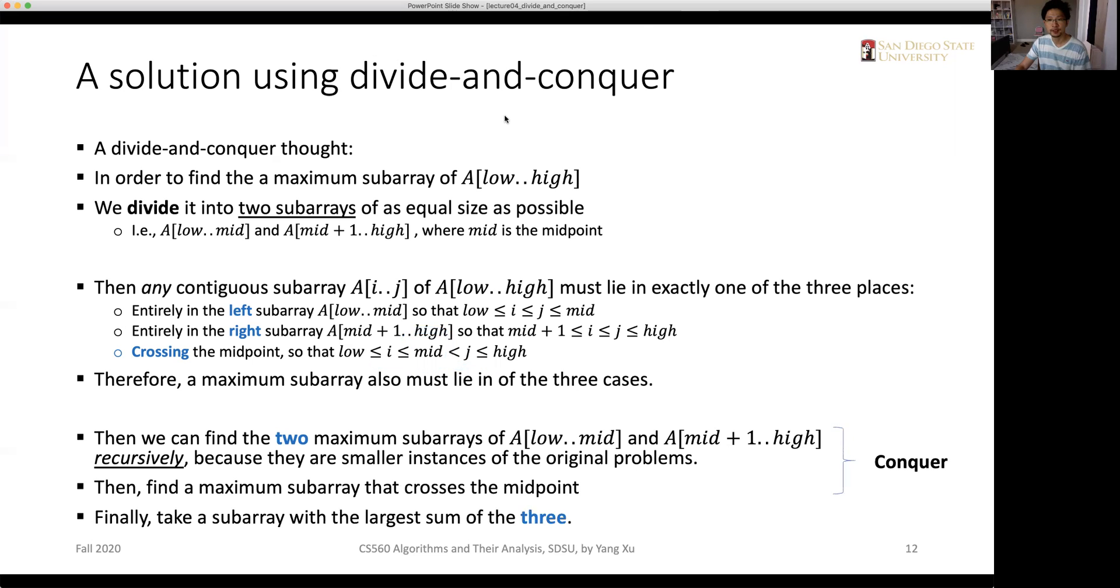If we summarize a bit, the divide step is here where we divide it into two subarrays. The conquer step is solving each case, and the combine step is where we return the largest one among the three subs.